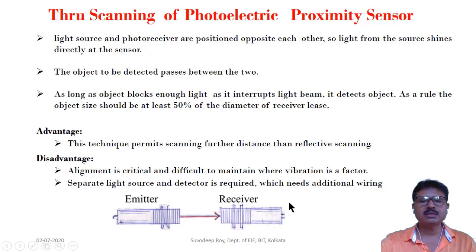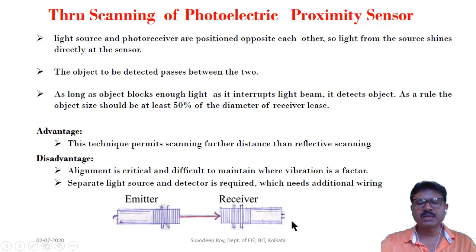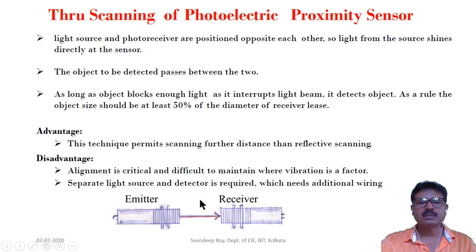Through scanning means the emitter is on the left side and the receiver is on the right side, facing each other. The emitter emits a light signal, and when this light signal reaches the receiver, the receiver detects the light. When light is received, it provides logic 1. Now if an object is placed in between the emitter and receiver, the light is blocked and it outputs logic 0, indicating that an object is detected. This is through scanning.